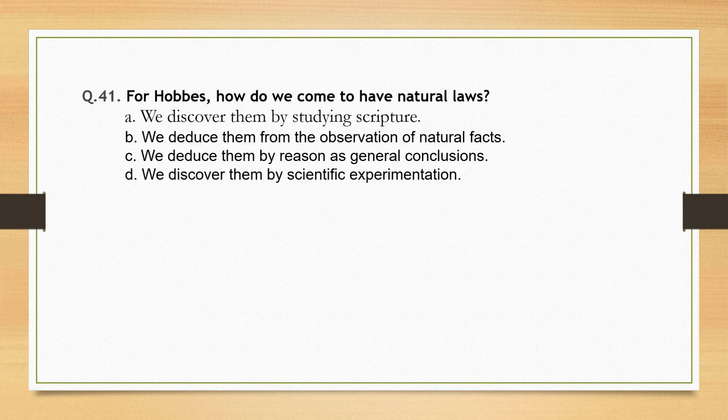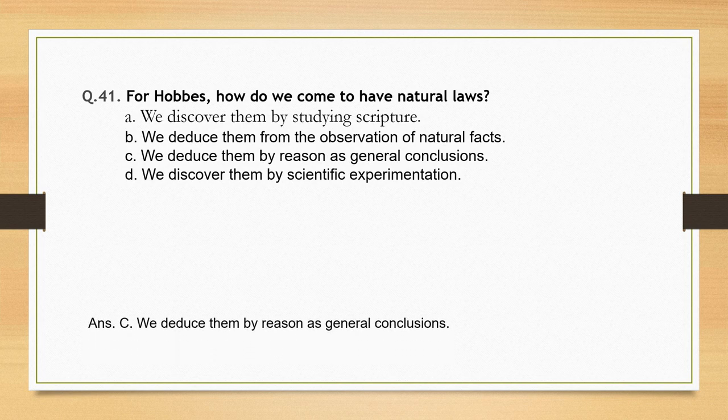For Hobbes, how do we come to have natural laws? Options: we discover them by studying scripture; we deduce them from the observation of natural facts; we deduce them by reason as general conclusions; we discover them by scientific experimentation. The correct option is option C: we deduce them by reason as general conclusions.